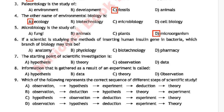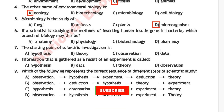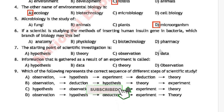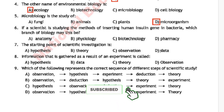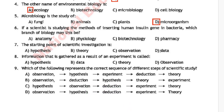MCQ number 6: if a scientist is studying the methods of inserting a human insulin gene in bacteria, which branch of biology may this be? Option A: anatomy, option B: physiology, option C: biotechnology, option D: pharmacy. The correct answer is option C, biotechnology.